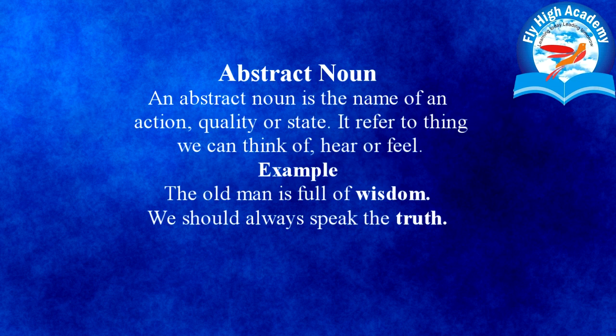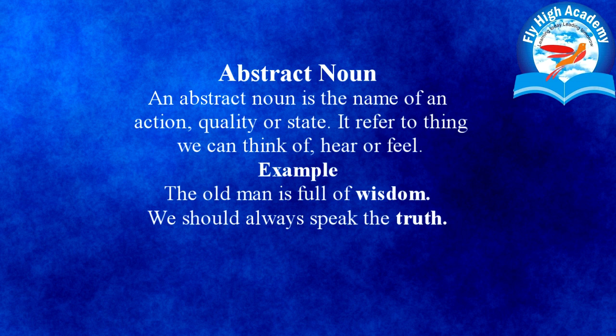Then abstract noun. An abstract noun is the name of an action, quality or state. It refers to things we can think, hear or feel. Abstract noun में वो सारे noun आते हैं जिनको हम देख नहीं सकते, लेकिन feel कर सकते हैं, सुन सकते हैं। For example, 'The old man is full of wisdom' — wisdom abstract noun है क्योंकि आप उसको देख नहीं सकते। 'We should always speak the truth' — truth को आप देख नहीं सकते। Abstract noun को Hindi में भाव वाचक संज्ञा बोला जाता है।